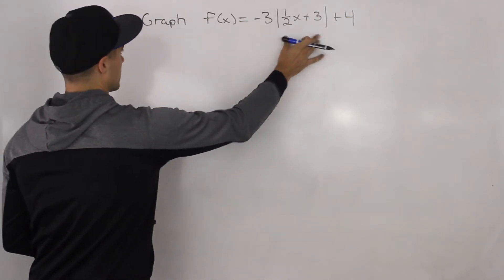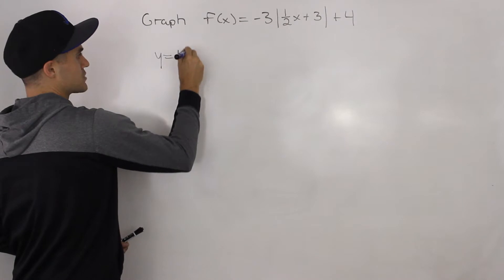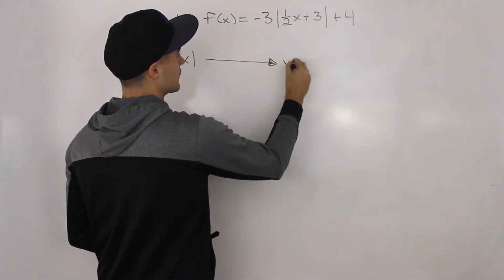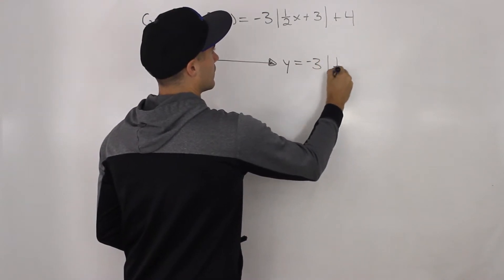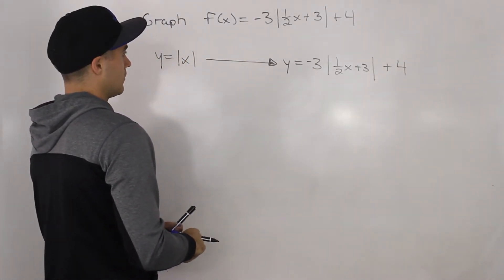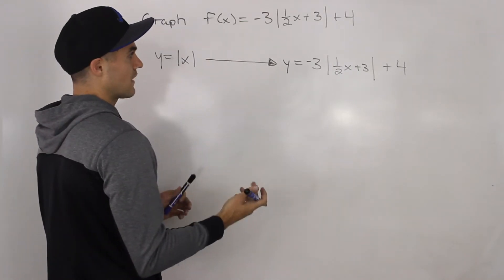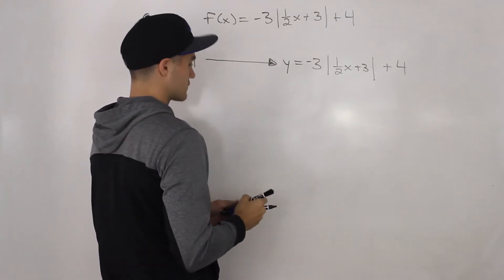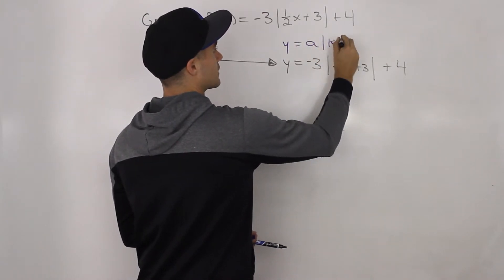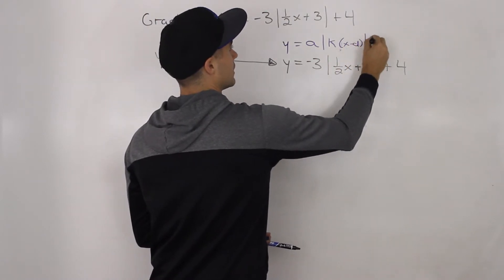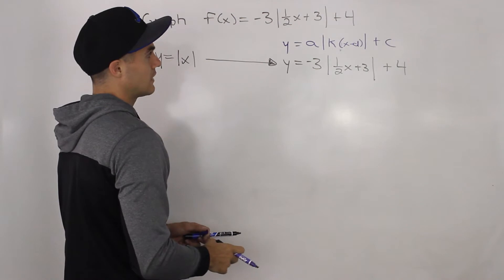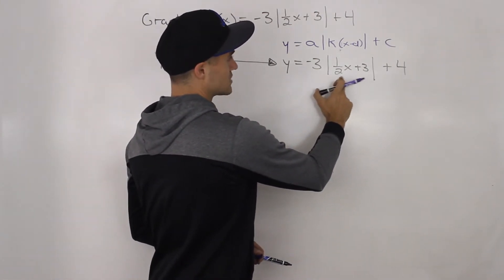The parent function, as you can tell, is the absolute value of x. We're transforming it into this function: negative three times the absolute value of one half x plus three, plus four. To find the transformation values, we need the function in the general format: a times absolute value of (x minus d) plus c. Notice how it's close to that format, except for the one half attached to the x — we need x to be by itself.